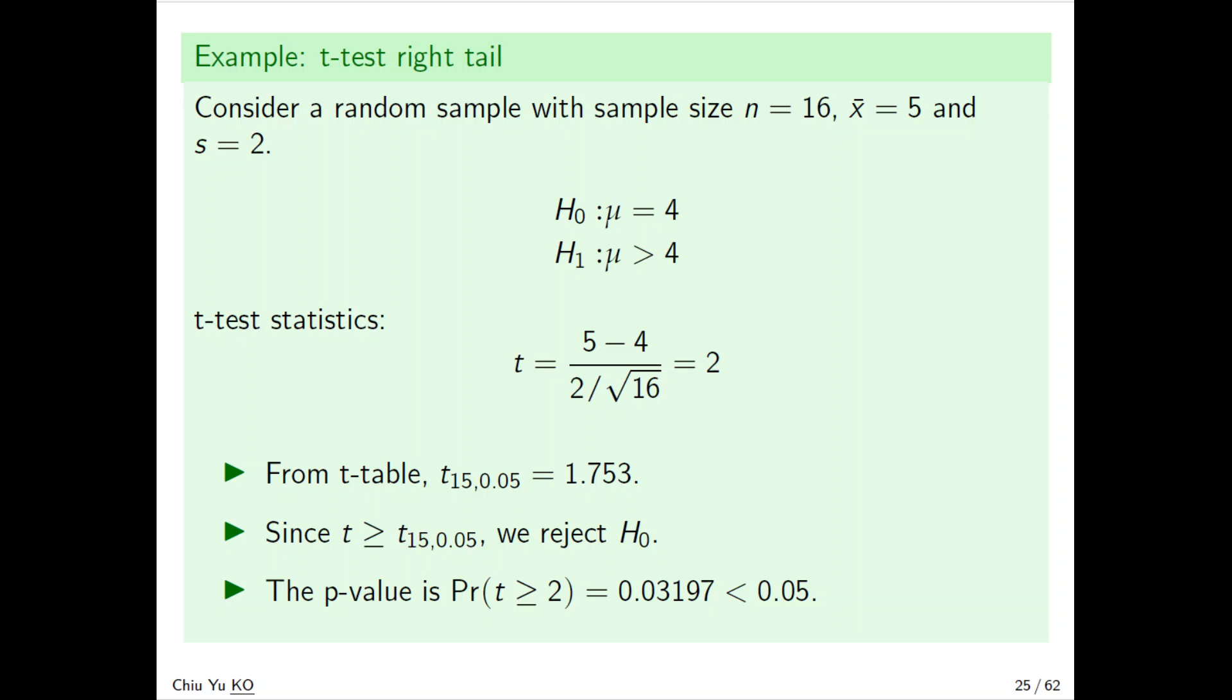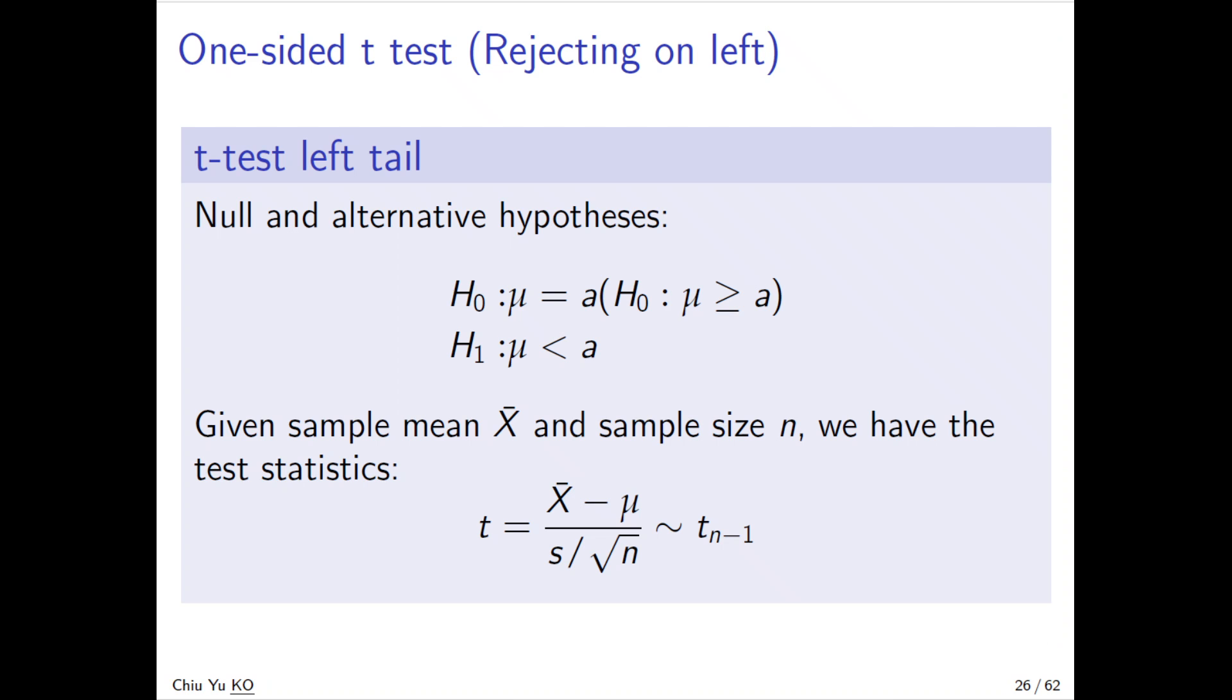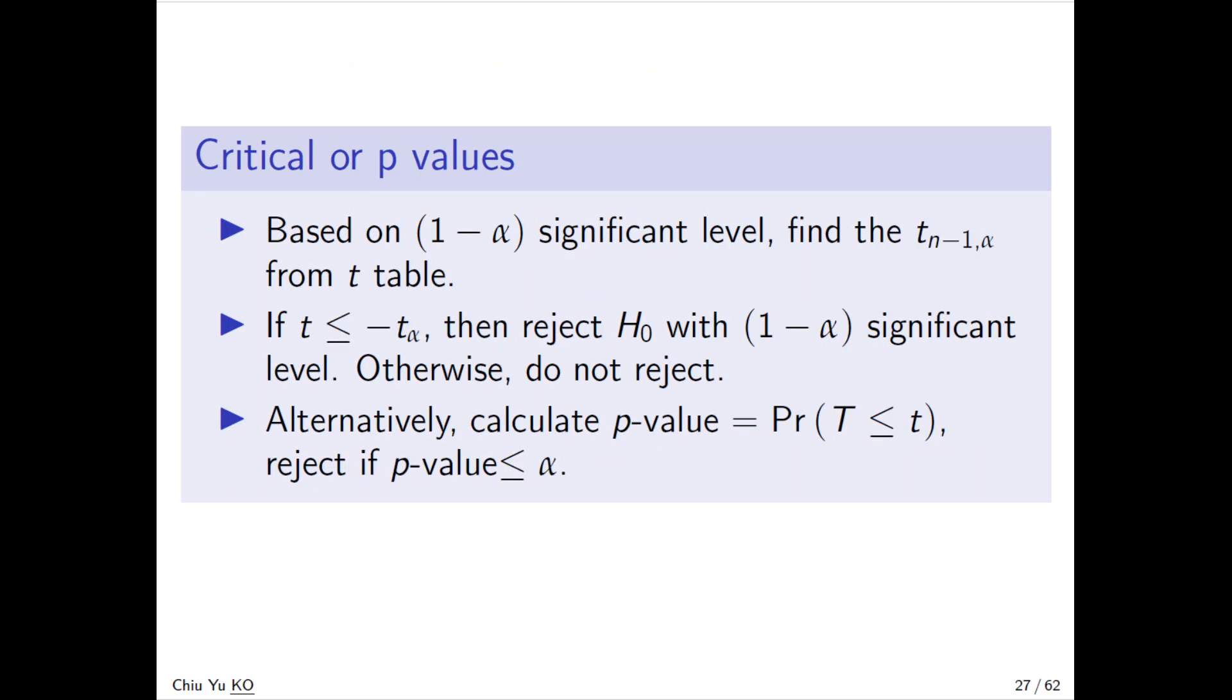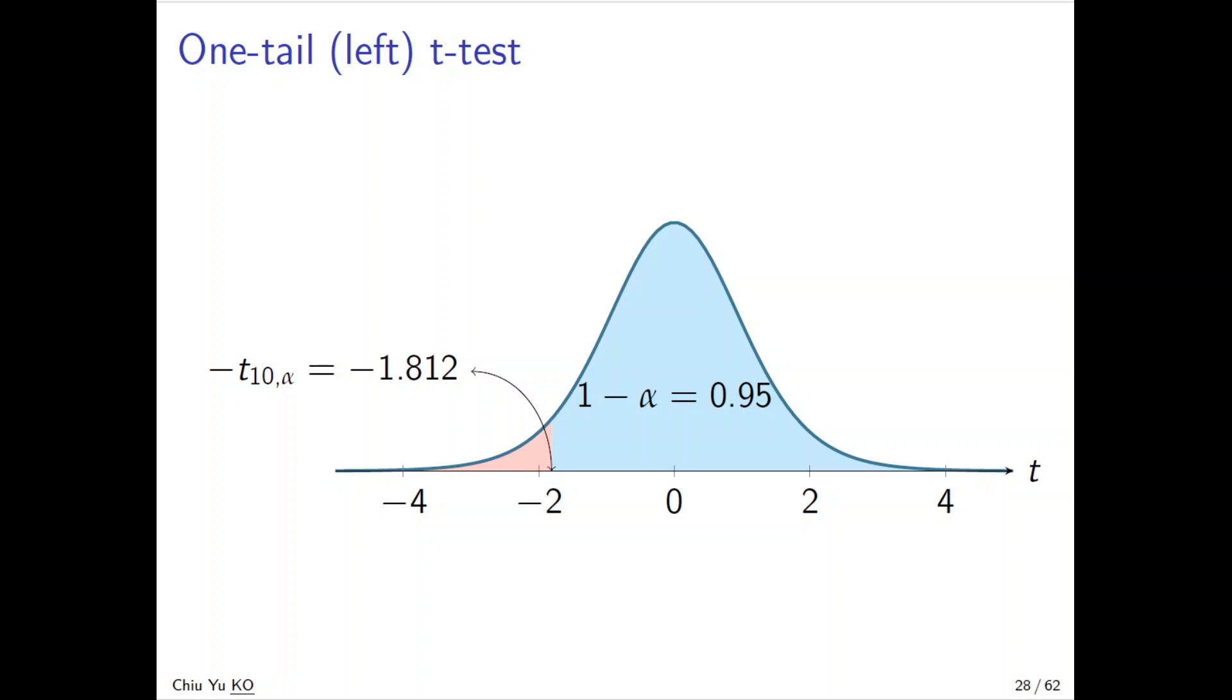Similar for the left tail - same idea, but you have less than in the alternative hypothesis. Here the same idea: we have n-1 degrees of freedom, and everything will be the same. You reject if t is less than the critical value -t_{α,n-1}, so you reject on the left side.